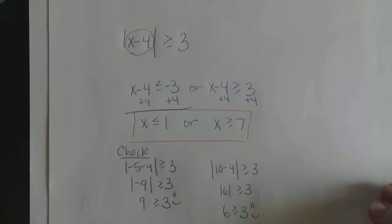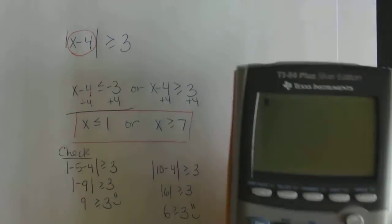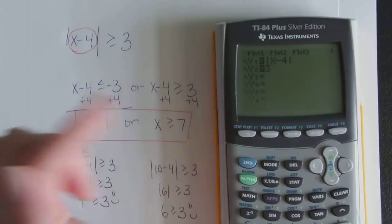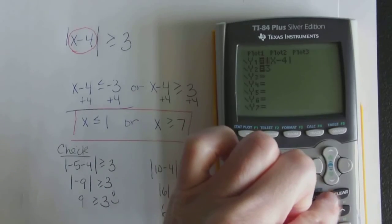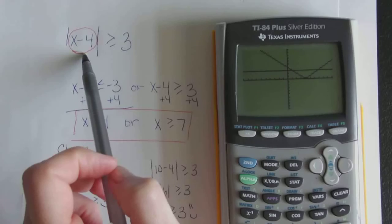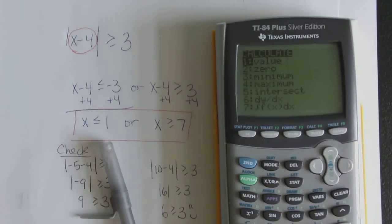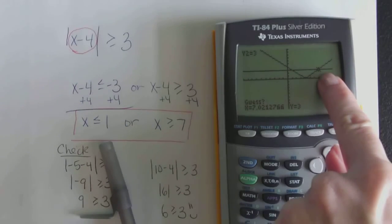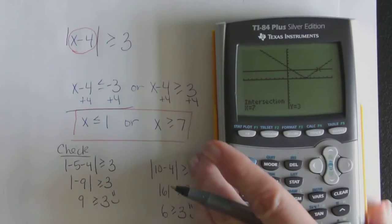Before we go, I wanted to bring in the visual for this last example. Let's go back to the calculator — you can follow along or just watch. Hit Y= and you'll see I've got the left side in Y1 and the right side in Y2. Go ahead and graph. Whenever you have an equation or inequality, you always want to find the edges — the points where the left side equals the right side. So let's find the intersections: second, trace, number 5, intersect, enter, enter. The first intersection is at x = 7.